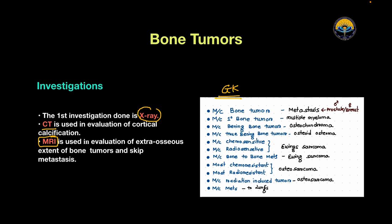Ewing sarcoma also causes the most common bone-to-bone metastasis. The most chemoresistant and radioresistant bone tumor is osteosarcoma — so Ewing sarcoma is sensitive while osteosarcoma is resistant. The most common radiation-induced tumor is osteosarcoma, which is also the most radioresistant. The most common metastasis from bone tumors goes to the lungs.